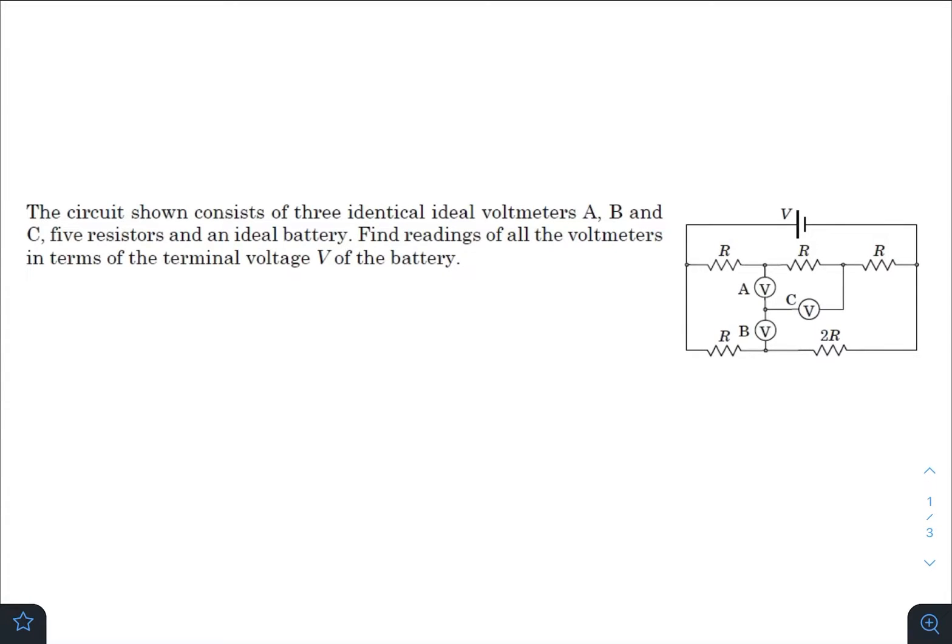Hey, what's up everyone! I hope you're all doing great. In today's question, we have a circuit consisting of three identical voltmeters A, B, and C, five resistors, and an ideal battery. Find the readings of all the voltmeters in terms of the terminal voltage V of the battery. Let us draw